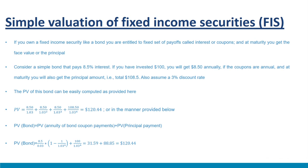Assume a 3 percent discount rate. It is not too difficult to compute the present value of this bond. PV = 8.5/1.03 + 8.5/1.03² + 8.5/1.03³ + 108.5/1.03⁴ = $120.44. Using our knowledge of valuing annuities, we can also separate the coupon and principal payments: PV = (8.5/0.03) × (1 − 1/1.03⁴) + 100/1.03⁴ = 31.59 + 88.85 = $120.44.